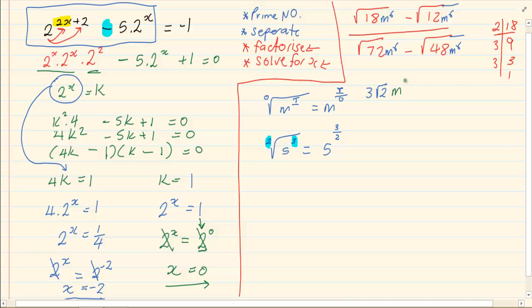Now based on that rule, we would have had m^(6/2) minus. Now the square root of 12 is 2√3. Again, m inside over outside. So it is 6 over 2, m^(6/2) all over. The square root of 72 is 6√2, m^(6/2) minus. The square root of 48 is 4√3, m^(6/2).